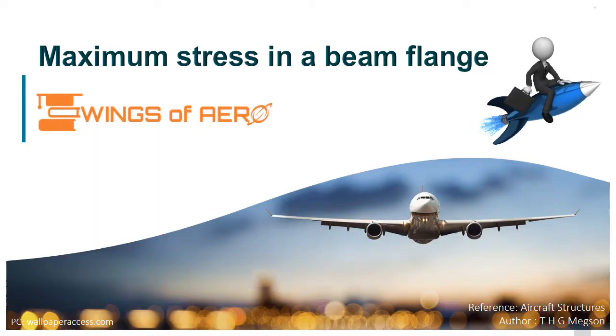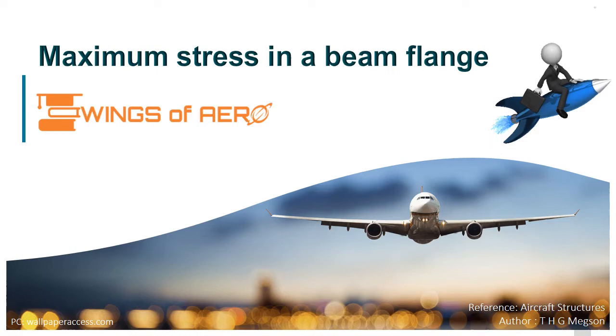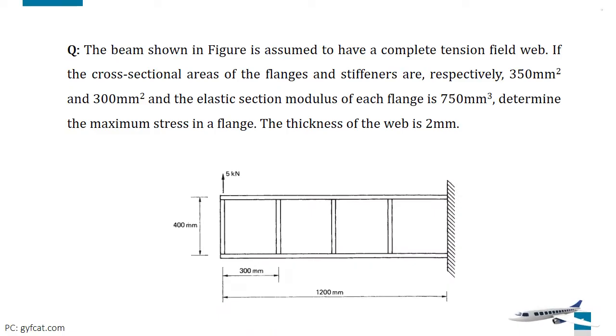Now, we are going to learn how to find the maximum stress in a beam flange. Consider the beam shown in figure, which is assumed to have a complete tension field web. If the cross-sectional areas of the flanges and stiffeners are respectively 350 mm² and 300 mm², and the elastic section modulus of each flange is 750 mm³, determine the maximum stress in a flange. The thickness of the web is 2 mm.